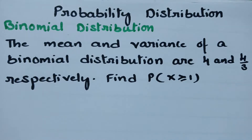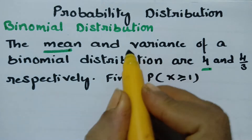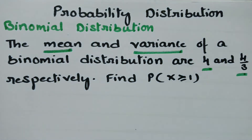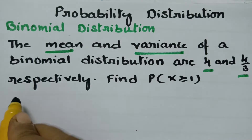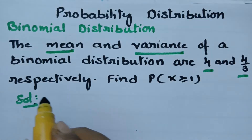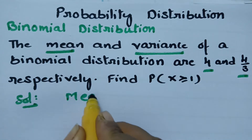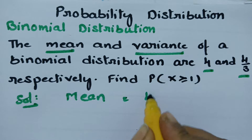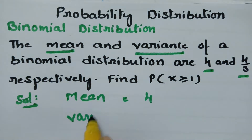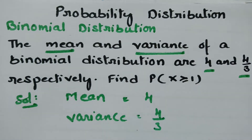Let's observe what is given. The mean value is given as 4 and variance is given as 4/3. First of all, the mean of a binomial distribution is equal to 4 and the variance of the binomial distribution is 4/3.